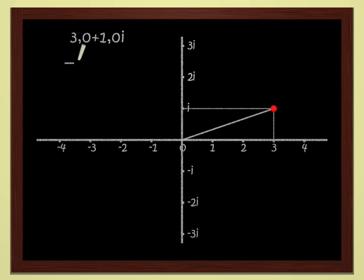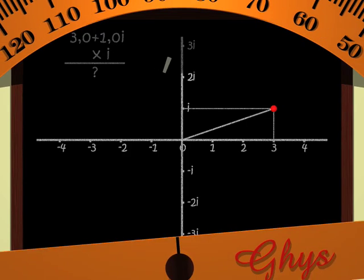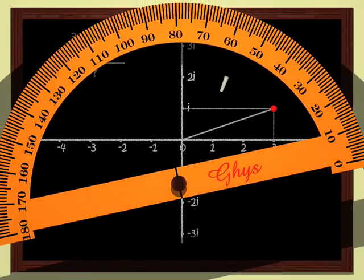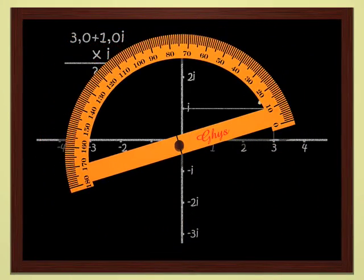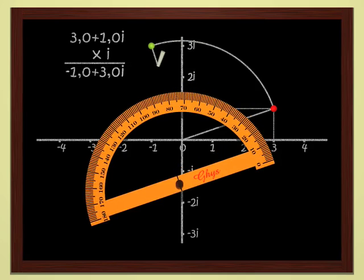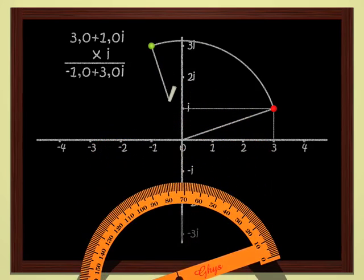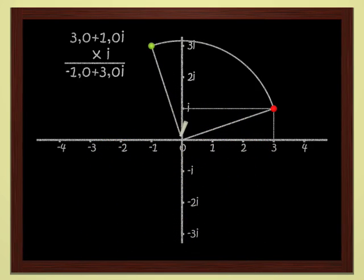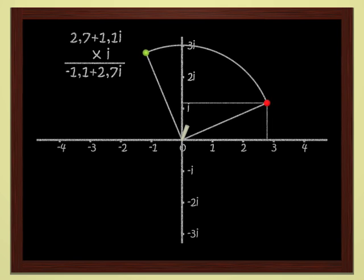Multiplying by i is not difficult either, since we know that i corresponds to a quarter turn. In order to multiply 3 plus i by i, we just have to rotate by a quarter turn. We get negative 1 plus 3i. Not so complicated, these complex numbers.